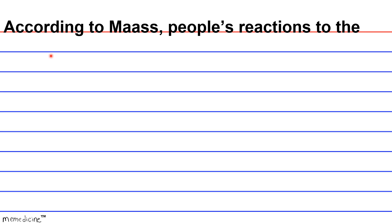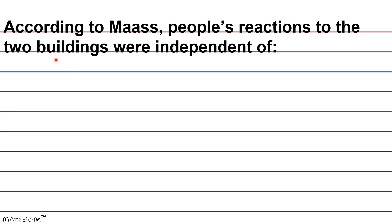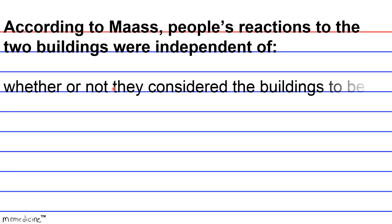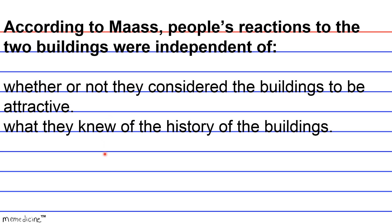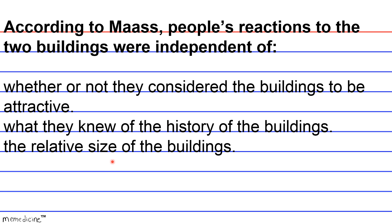Question: According to Mass, people's reactions to the two buildings were independent of — A) whether or not they considered the buildings to be attractive; B) what they knew of the history of the buildings; C) the relative size of the buildings; or D) the influence of their peers. Take a moment to think and go back to review the passage — you may need to in order to answer this question.